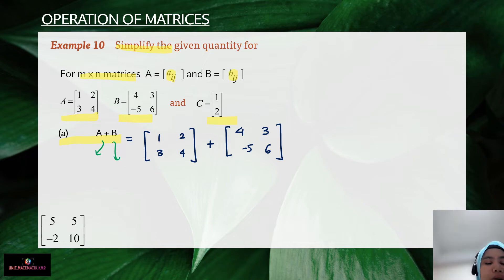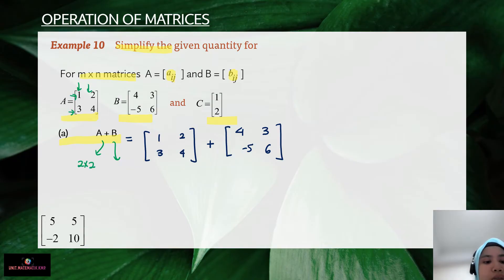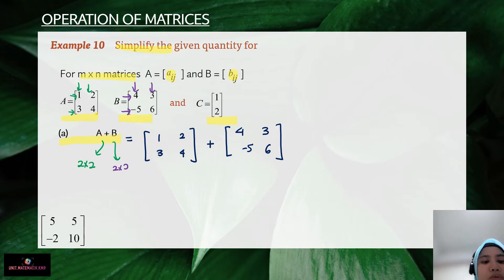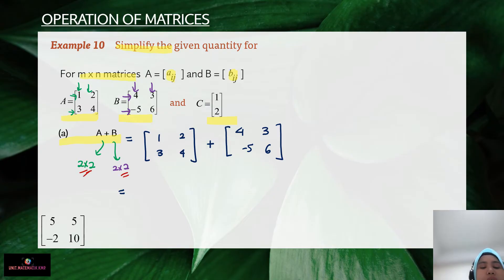Before we add, let's identify the order of each matrix. Matrix A has two rows and two columns, so it is 2 by 2. Matrix B also has two rows and two columns, so it is also 2 by 2. Since the orders are the same, we can proceed with the addition.